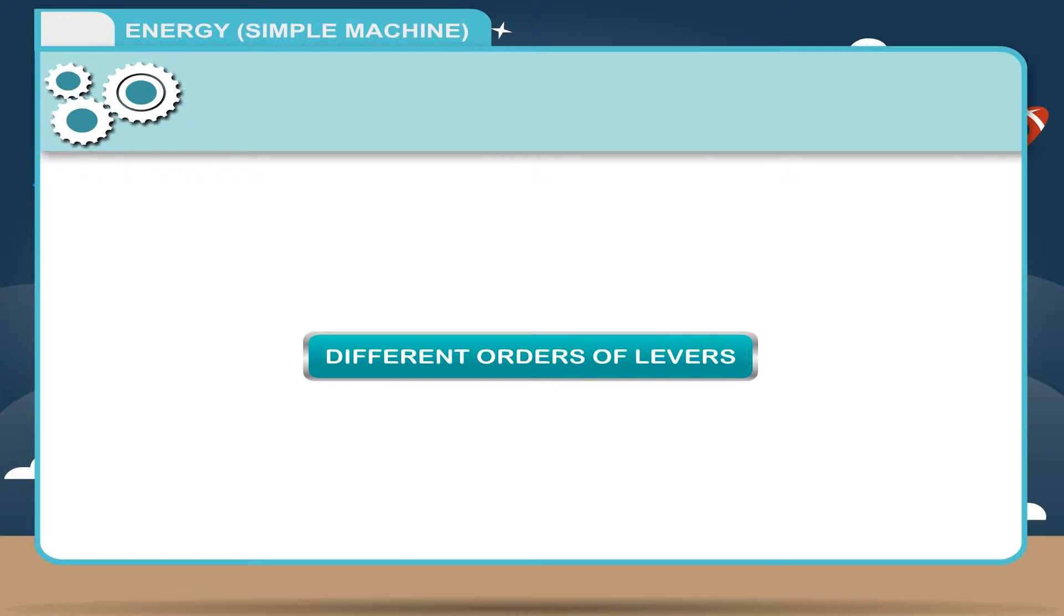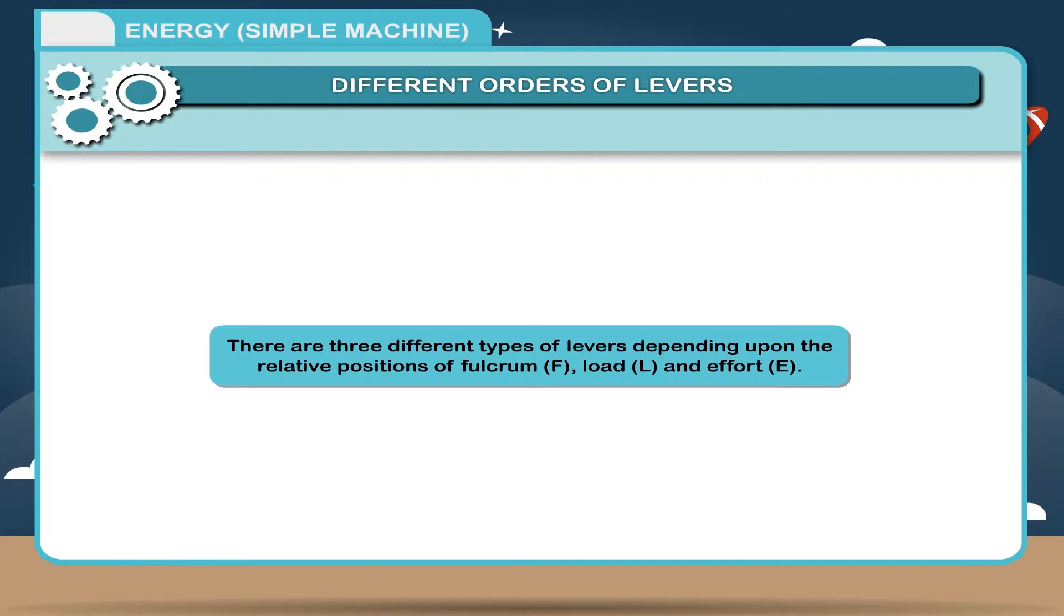Different orders of levers. There are three different types of levers depending upon the relative positions of fulcrum F, load L and effort E.